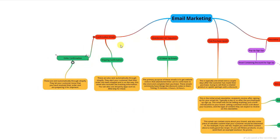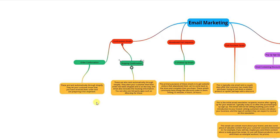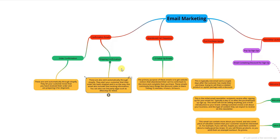First, we have confirmation emails. There are two types: order confirmations and shipping confirmations. These are the easiest types of emails to set up because they're pretty much automatic. Order confirmations are sent automatically through Shopify and let your customer know that you've received their order and are preparing it for shipment.